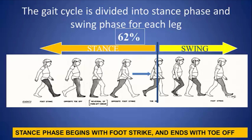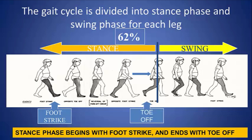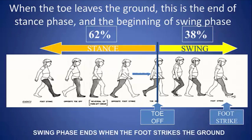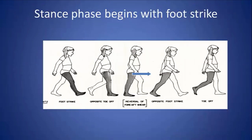The gait cycle is divided into stance phase and swing phase for each leg. Stance phase begins with foot strike and ends when that foot lifts up off the ground at toe-off, and this constitutes about 62% of the entire gait cycle. When the toe lifts off the ground, this begins swing phase, where the leg swings forward and gets ready to accept weight for the next step. This constitutes 38% of the total gait cycle. Swing phase ends when that foot strikes the ground, and then the next gait cycle begins.